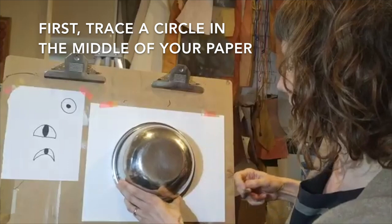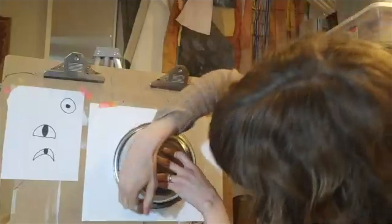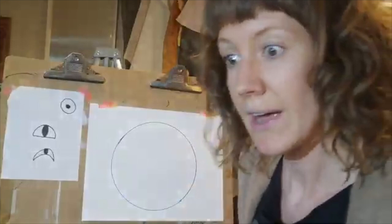Before we put our eyes on the paper, we're going to make a circle in the middle of our paper. If you can find a circular object that takes up about this amount of space on your paper, that would be great. I'm going to hold mine down with one hand and trace around it with the other hand, and there we have our circle.